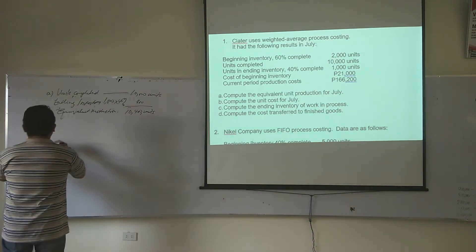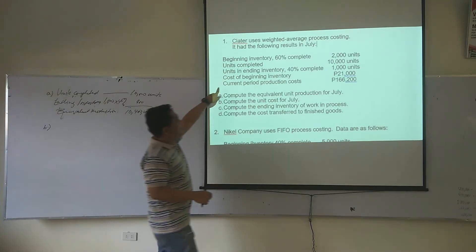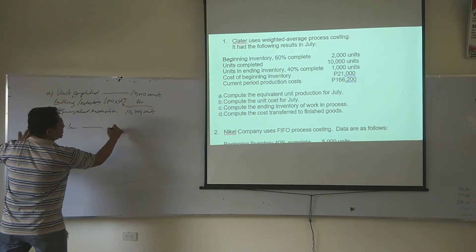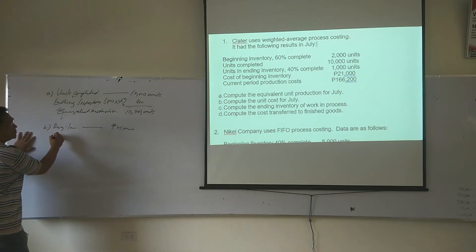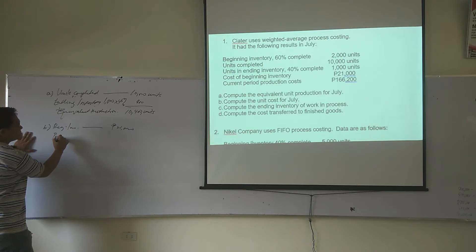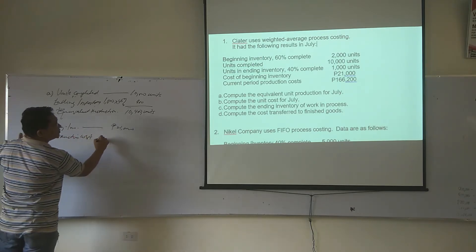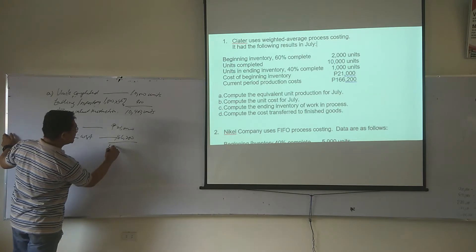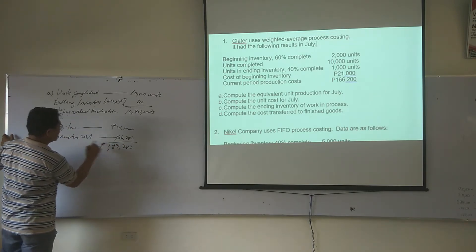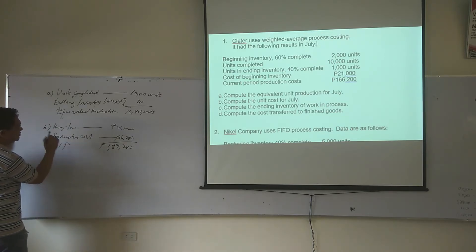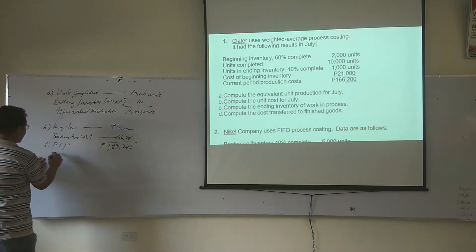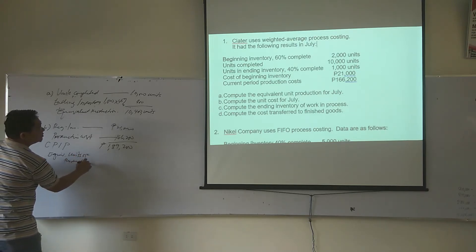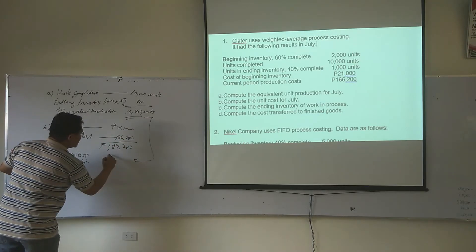For July, we have beginning inventory of 1,000. Then we have production cost of 166,049 minus 6,200 cost. So we have 189,200 total cost in process, divided by equivalent units of production which is 10,400.